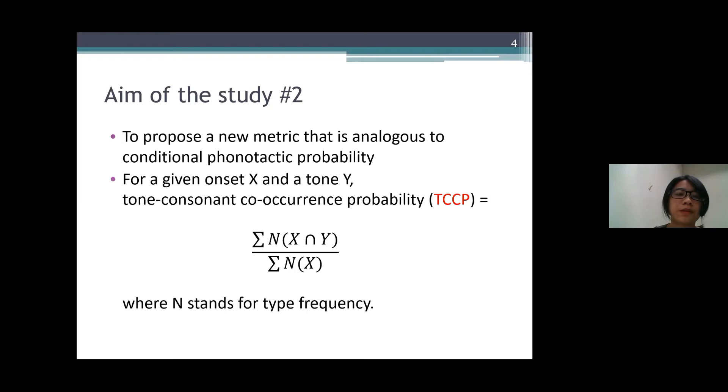And the second aim of this study is to propose a new lexical metric that is analogous to conditional phonotactic probability. So for a given onset X and a lexical tone Y, the term tone-consonant co-occurrence probability or TCCP is operationally defined as the type frequency of the combination of X and Y divided by the type frequency of X. More details of the calculation will be provided later.